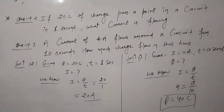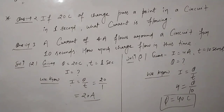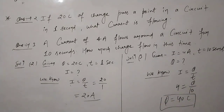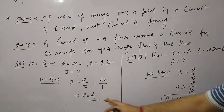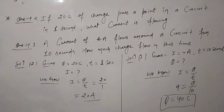Smaller units of current include milliampere and microampere. Milliampere equals 10 to the power minus 3 ampere, written as mA. Microampere equals 10 to the power minus 6 ampere. So milliampere is 10 to the power minus 3 and microampere is 10 to the power minus 6.